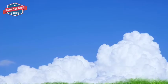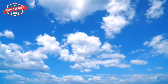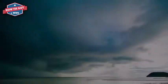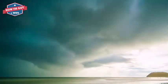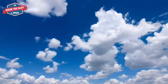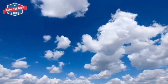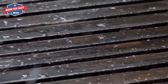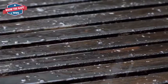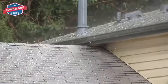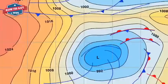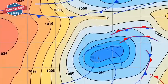Some water changes to a gas called water vapor. Water vapor rises and falls back to Earth as precipitation from clouds. Rain gauges measure the amount of precipitation that falls in an area.